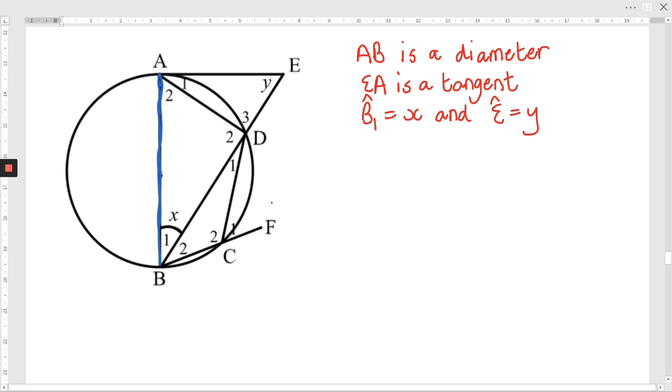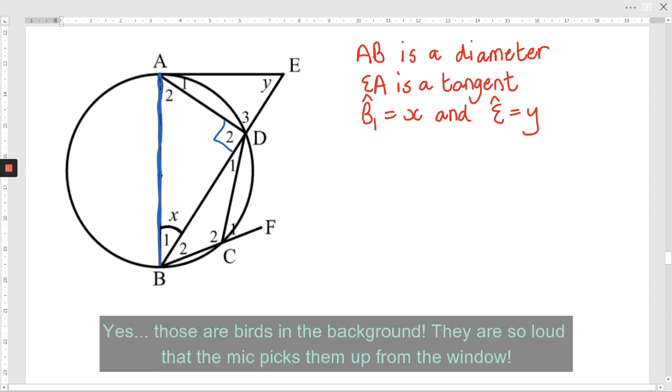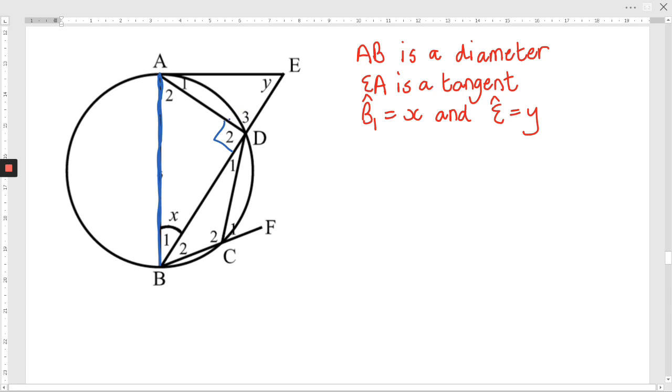Before I move on, I need to see what a diameter gives me. A diameter subtends 90 degrees. Does that give me anything else? Well, strangely, this 90 degrees is on a straight line with another angle, right? So that means that D3 is also 90 degrees.